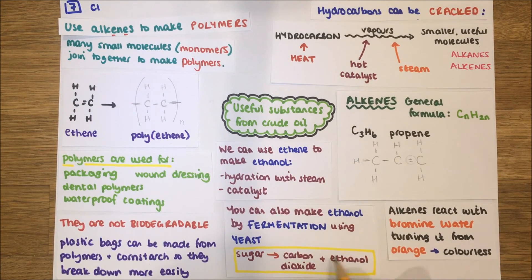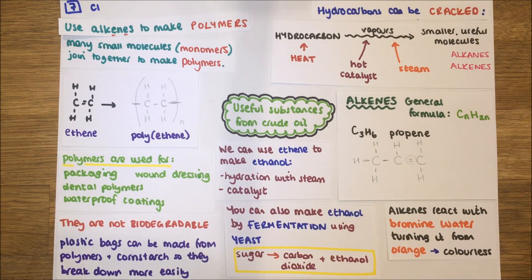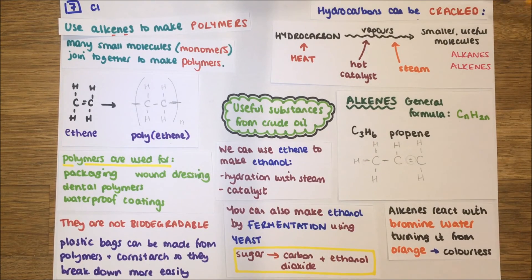That's not the only way to make ethanol — you can also use yeast, which is a microorganism, in fermentation. We give the yeast sugar in a nice warm environment; it produces carbon dioxide through respiration and ethanol as a by-product. We can then use that ethanol to make alcoholic drinks. We also use yeast to make bread, because the carbon dioxide it produces helps the bread rise.